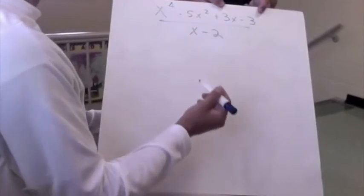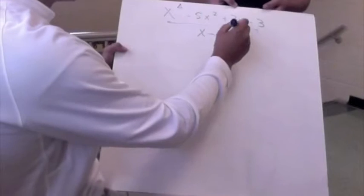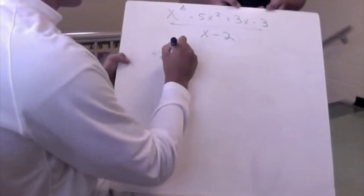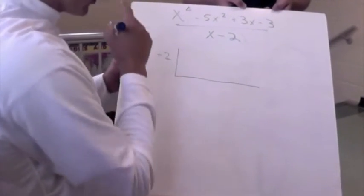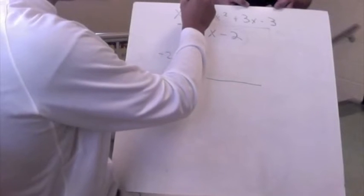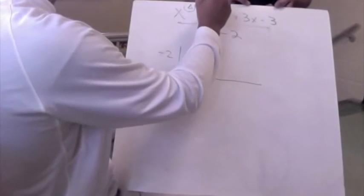We have a synthetic division again, same format as last time. So we're going to take our negative 2, and we're going to make that a positive outside of our little synthetic division box. So this one's a little bit trickier than last time, because our exponents go in order from 4 to 2. And they skip a 3.